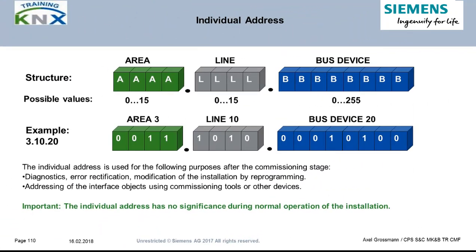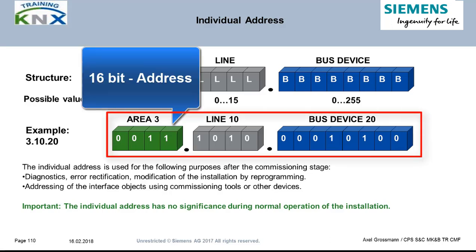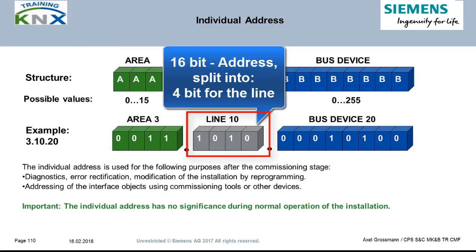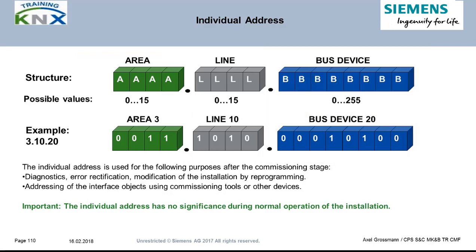The topology described so far requires a suitable subscriber addressing scheme. KNX has a 2-byte or 16-bit long address, split into three parts assigned to area, line, and device number in that sequence from left to right. It is called the individual address, also sometimes the physical address. You could call it the Christian name of the subscriber.